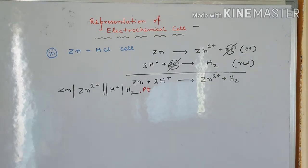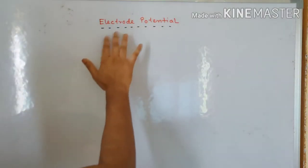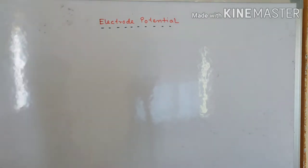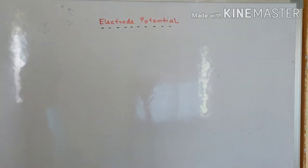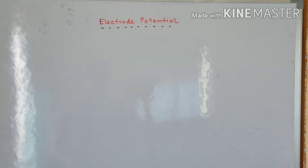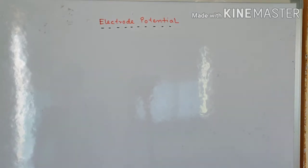Now we are going to shift our attention to understand what is electrode potential and EMF of a galvanic cell. The main reason behind the flow of current is this. The flow of electric current in an electrochemical cell indicates that there is a potential difference, which exists between the two electrodes. To understand that potential difference, the electrode potential is to be understood.